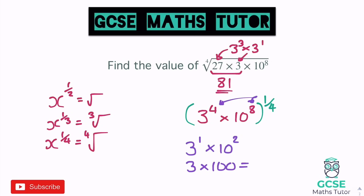That simplifies to 3 times 100, which gives us the answer 300. I've shown you why a fourth root does that to the powers: writing the fourth root as a power of a quarter and then multiplying gives 4 times a quarter equals 1 and 8 times a quarter equals 2, simplifying down to 3 to the power of 1 times 10 squared, which comes out as 300.